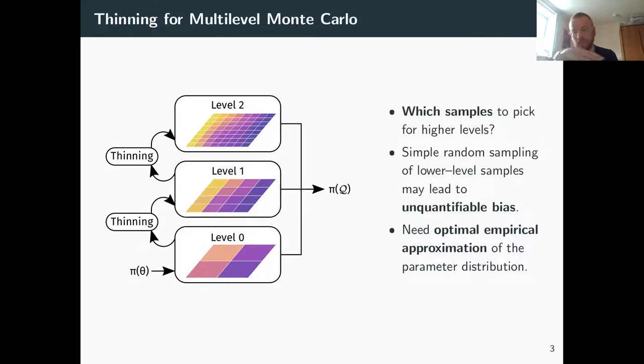The first context here is multi-level Monte Carlo, where you have some levels of a model with maybe different discretizations or however you've constructed these levels. You draw some samples from a distribution and then you pass successively fewer samples up to the next levels. So the question here is which samples to pick, and if you can pick only very few samples and maybe the distribution is a bit complicated, then just doing simple random sampling of the lower levels may actually introduce some bias.